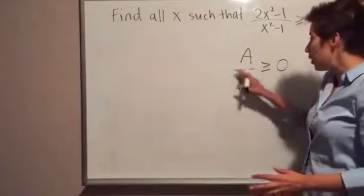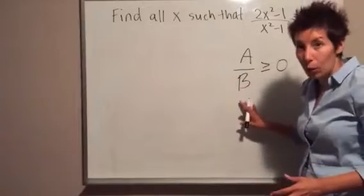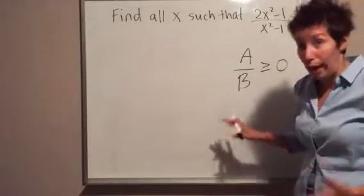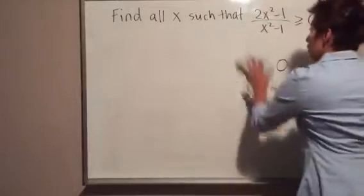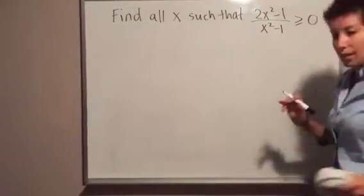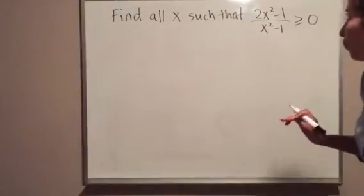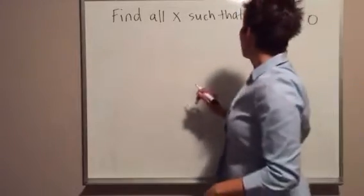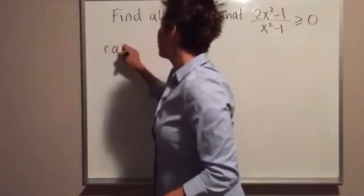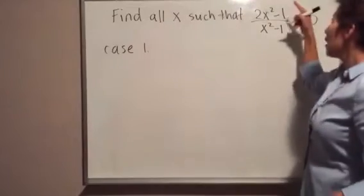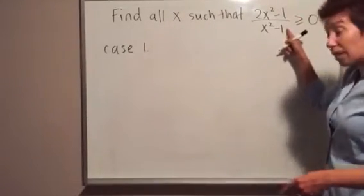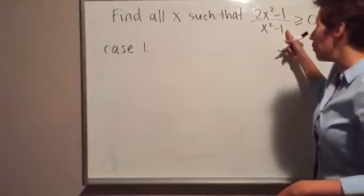Note, though, that we never want b to be 0, because dividing by 0 is undefined. With that in mind, let's look at this example and see if we can find a solution. Case 1 is that the top is positive and the bottom is positive at the same time.